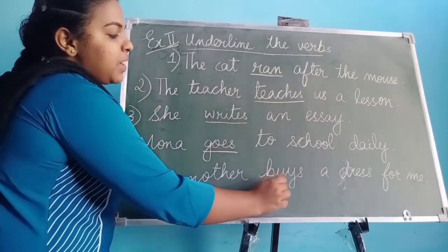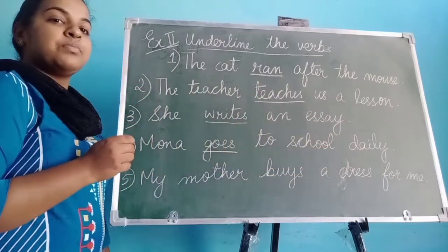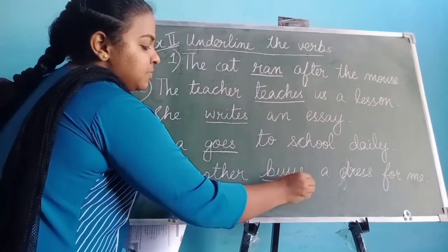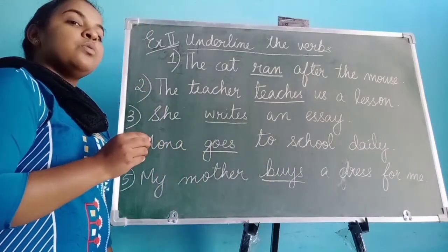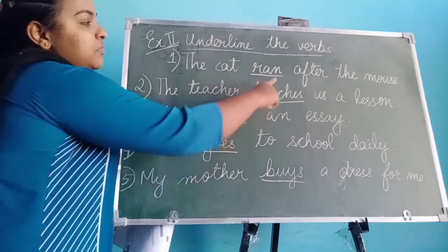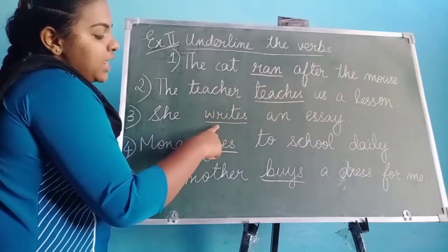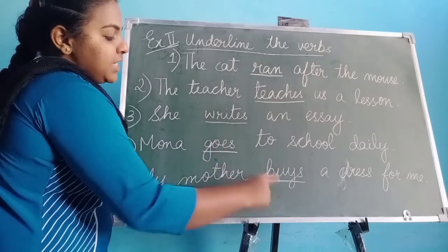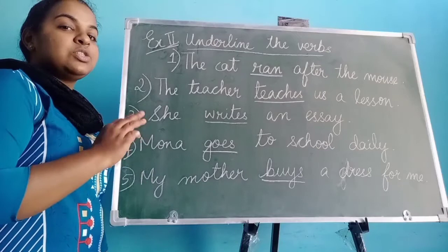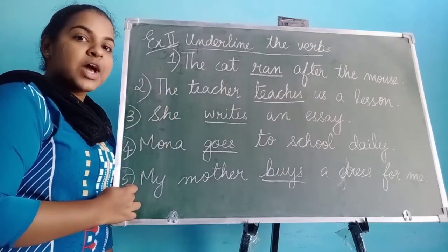My mother buys a dress for me — what is the action word here? Buys. So here we have found what the verbs are: ran, teaches, writes, goes, buys. These are the answers of exercise two from question number one to question number five.